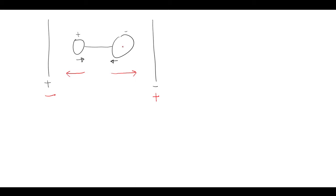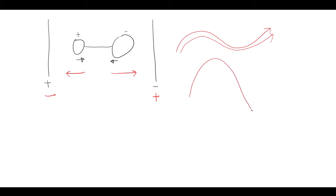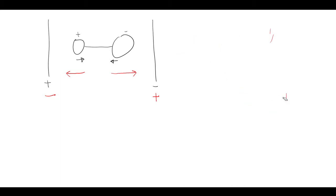If the back-and-forth motion induced has the same amplitude and frequency necessary to promote a vibrational excitation, the light will be absorbed - a photon will be absorbed by the molecule. Really it's a coupling of the light's electric field to the natural electric field of the molecule, generating an electric field with twice the amplitude at the same frequency.